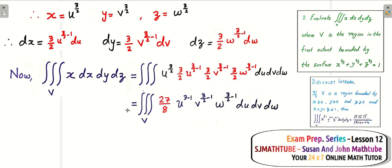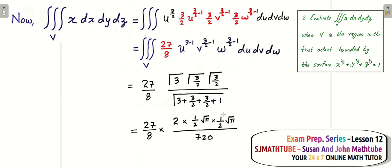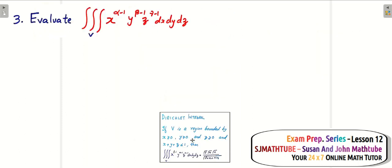After substitution, the integral now looks exactly like Dirichlet's integral. So the answer is Γ(3)·Γ(3/2)·Γ(3/2) multiplied by 27/8, all divided by Γ(3 + 3/2 + 3/2 + 1). Simplify using the gamma function properties you learned in the first semester, and use a calculator if needed.